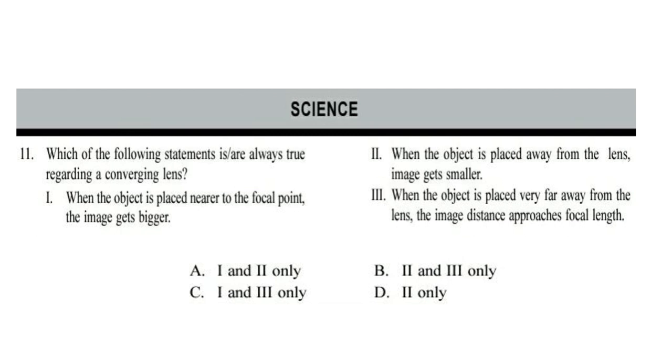Question 11. Which of the following statements is or are always true regarding a converging lens? 1. When the object is placed nearer to the focal point, the image gets bigger. 2. When the object is placed away from the lens, image gets smaller. 3. When the object is placed very far away from the lens, the image distance approaches focal length. Correct answer is option C. 1 and 3 only.